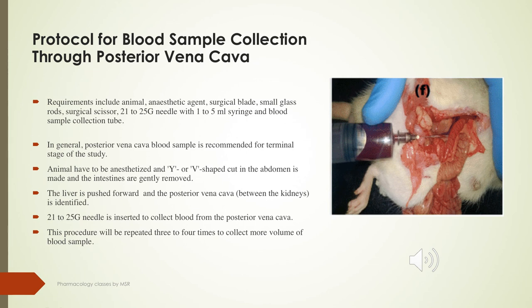The posterior vena cava method is also a terminal blood collection procedure. Equipment includes anesthetic agent, surgical blade, scissors, gauze needles, syringe, and collecting tubes. The posterior vena cava is located between the kidneys. A Y- or V-shaped cut is made in the abdomen, intestines are removed, and the liver is pushed forward to expose the posterior vena cava. A needle is inserted and blood is collected, with the procedure repeated three or four times to obtain larger volumes.